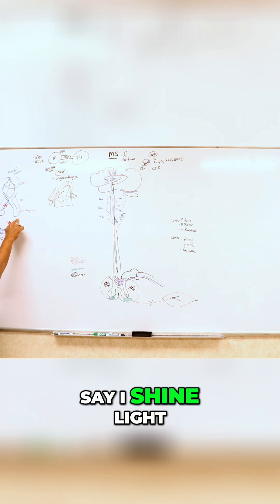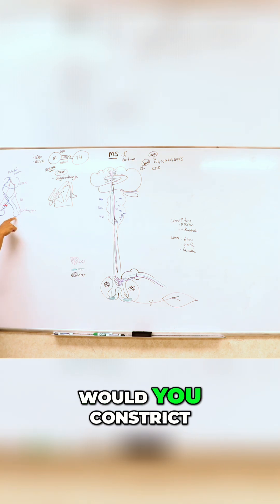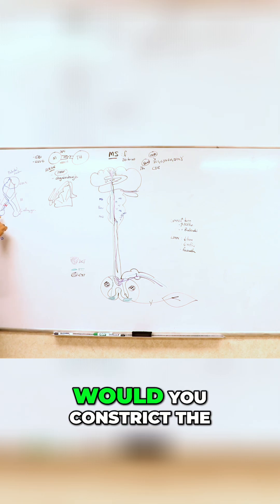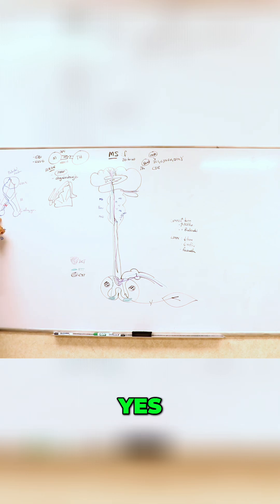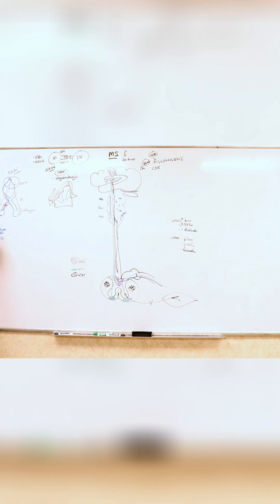Say I shine light into the unaffected eye—would you constrict this eye? Yes, you would constrict this eye. Would you constrict the other eye? Yes, because if you stimulate here, it's going to go to this side and connect both. It should be fine. But say I go to this eye. If I shine light into this eye, would I constrict this eye? No, because your connection all the way up there is gone. Would I constrict the other eye? I will not.